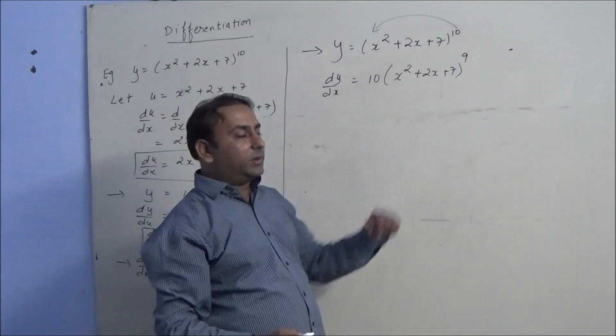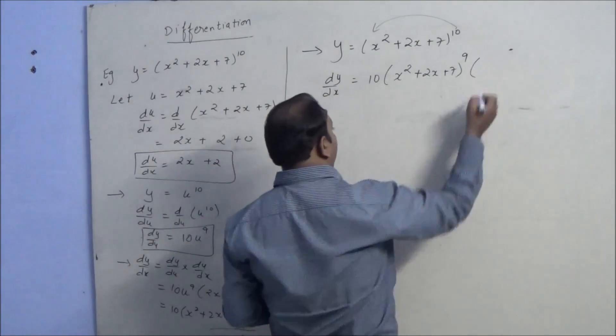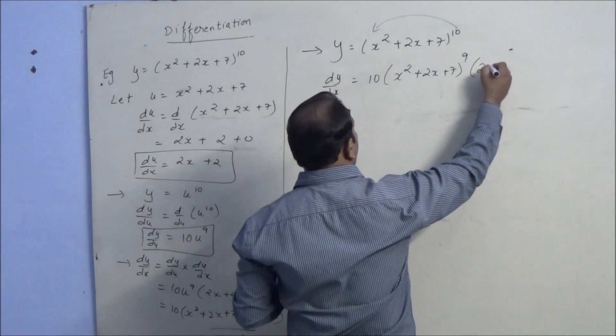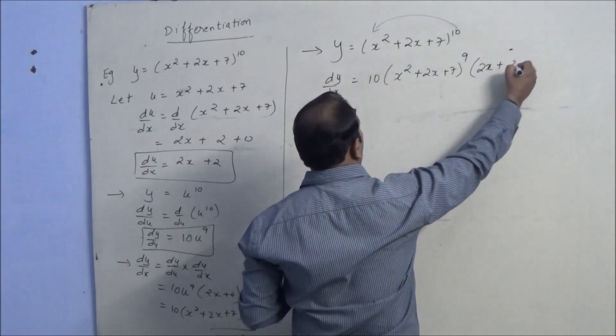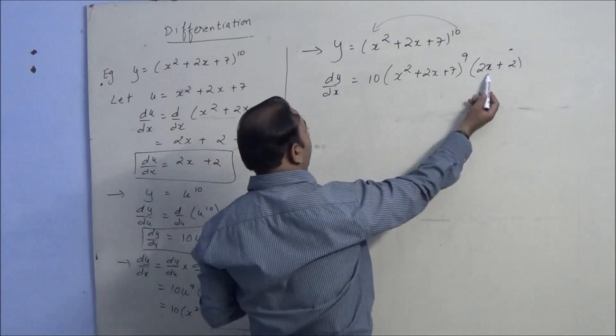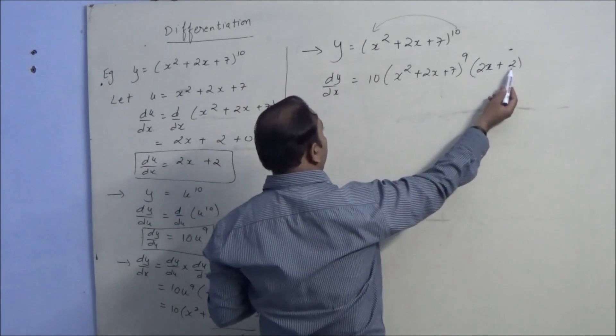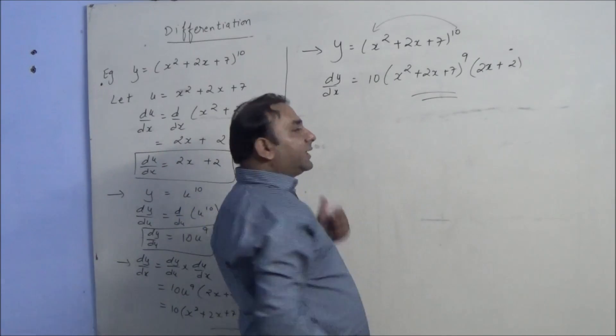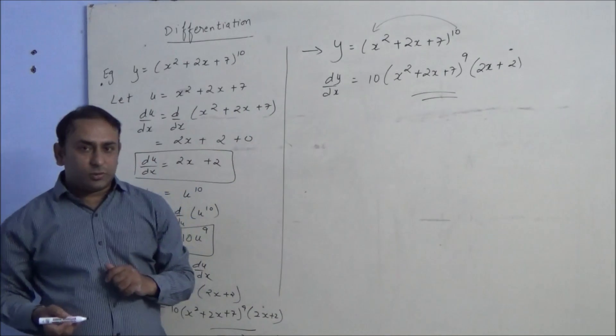And in the second bracket, find the derivative of this bracket, that will be 2x plus 2. The derivative of x squared is 2x, of 2x it will be 2, and as 7 is constant it will be 0. It can be done by one step also.